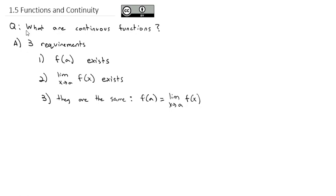If you recall from our conversation about limits, we really like the situation when we can just plug what x is approaching into the function and get that result. If that works out, that is considered continuous at that point. A loose definition of continuous is that the graph could be drawn without lifting our pencil. But if you have to lift your pencil because there's a gap, a hole, or an asymptote going off to infinity, that makes a discontinuous point.